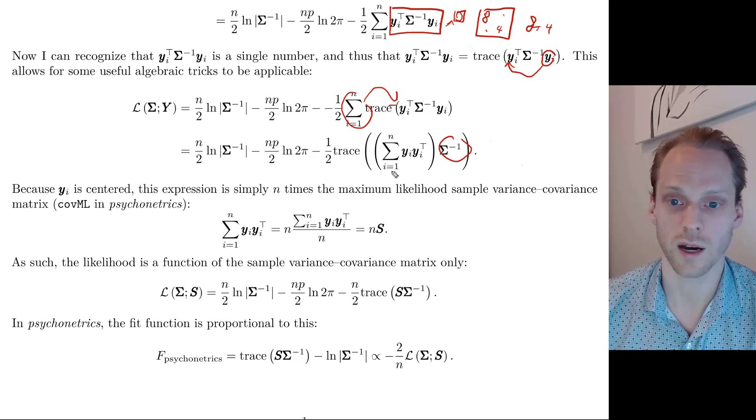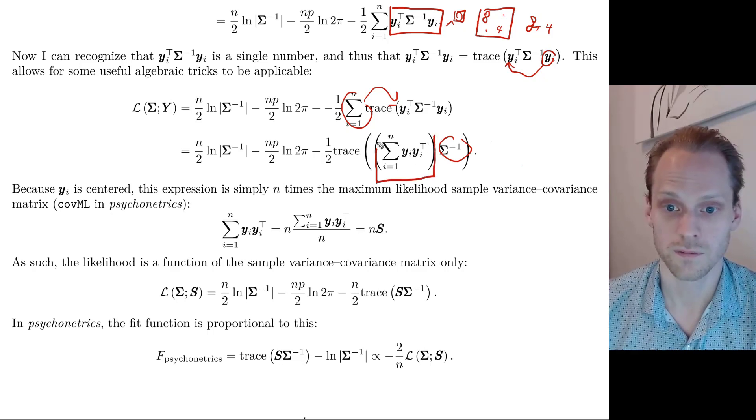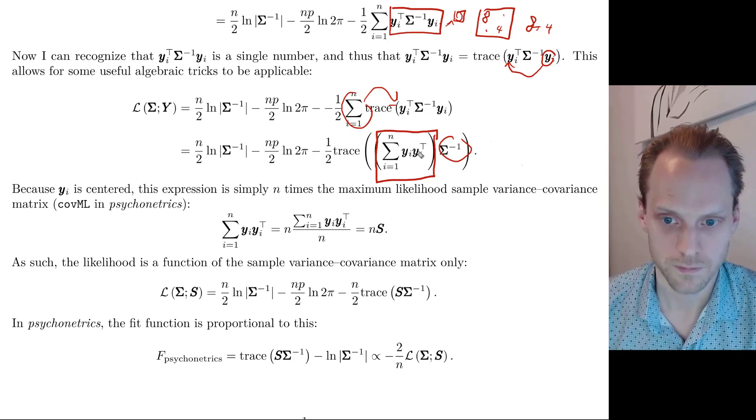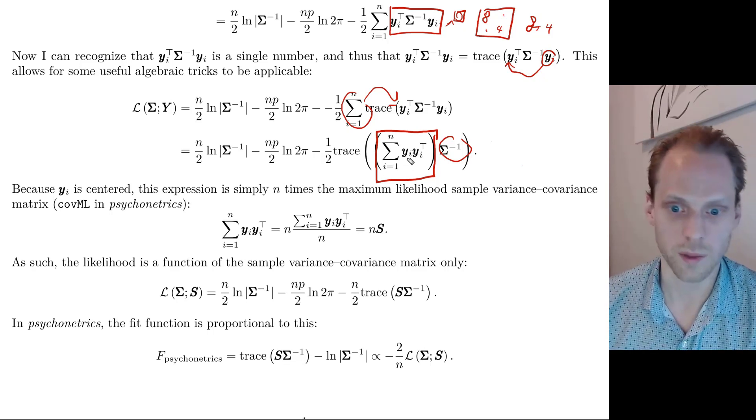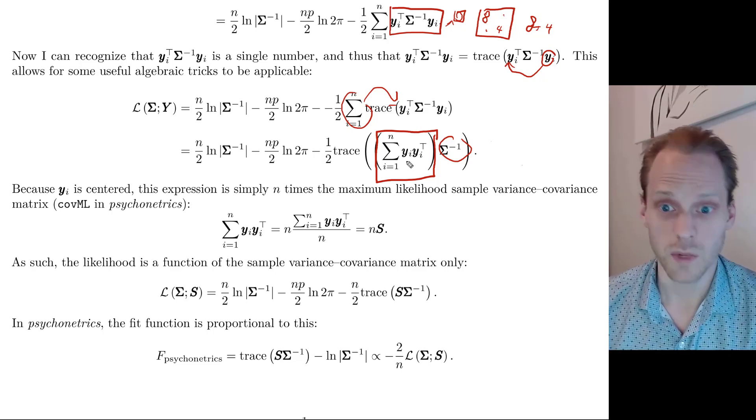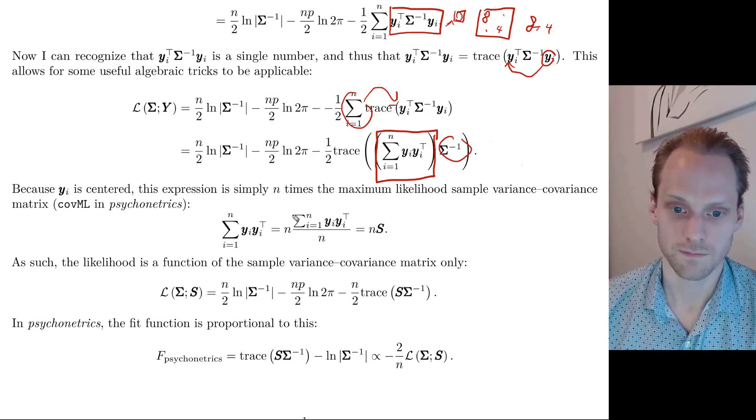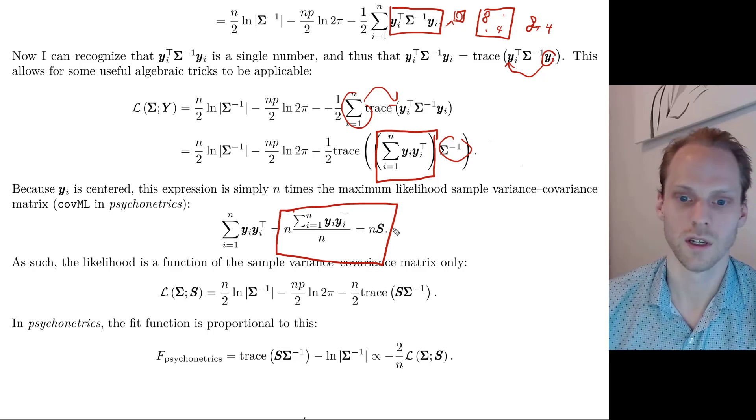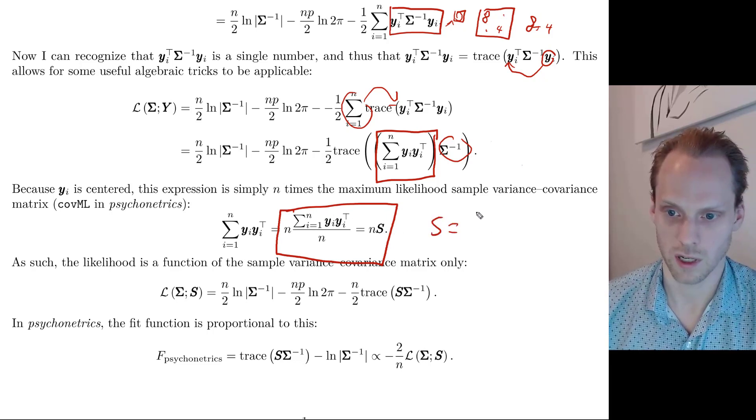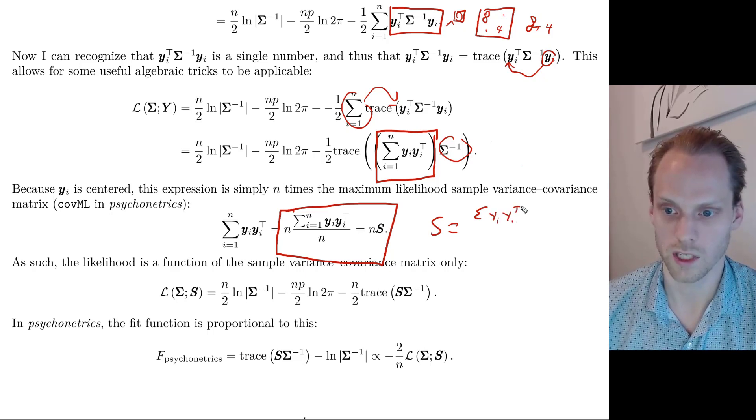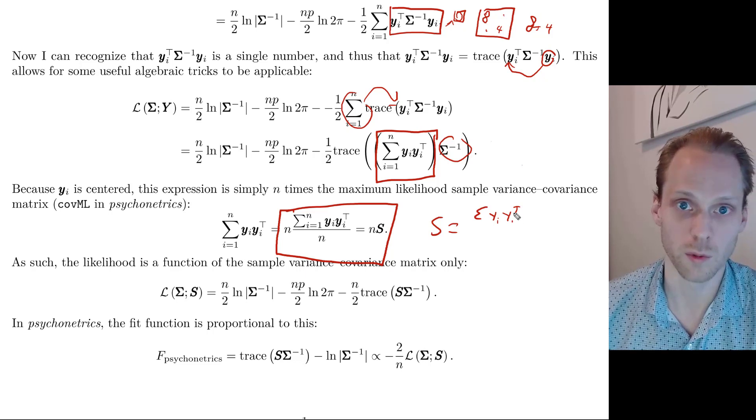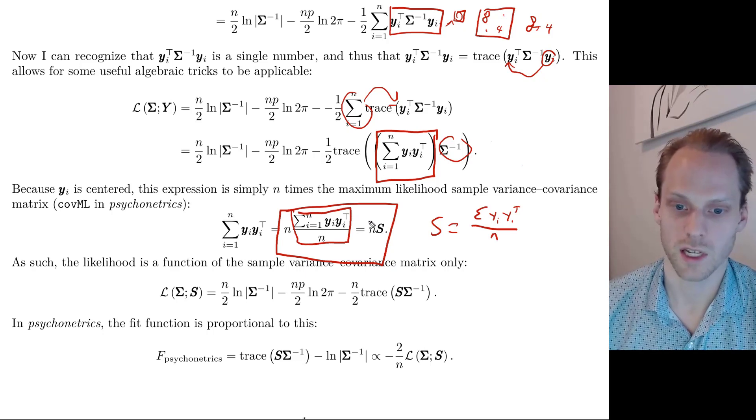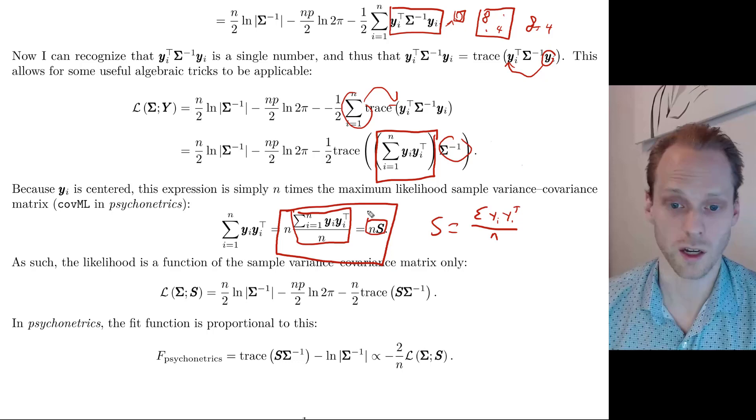One thing we can do in the trace is we can arbitrarily move something to the left. That's a really useful trick actually. Another thing we can do is we can add a sum sign in the trace itself, which is also a useful trick. So that's what I did here. I moved something to the left and I added a sum sign. Then we have this trace with this sum here. Well, this is not a function of i anymore, so I can take it out of the sum sign. Then here, what I'm left with is the sum over a response pattern times its transpose.